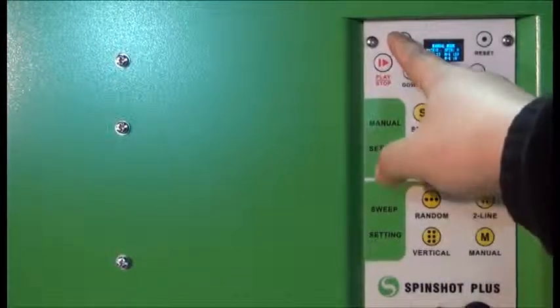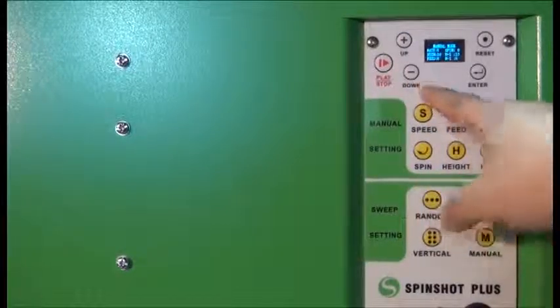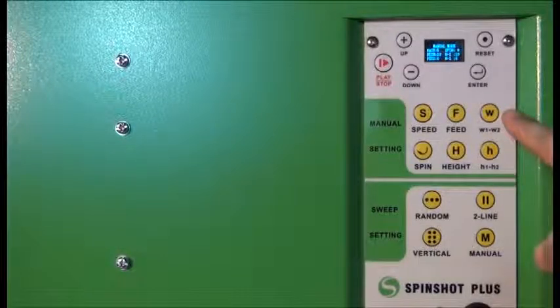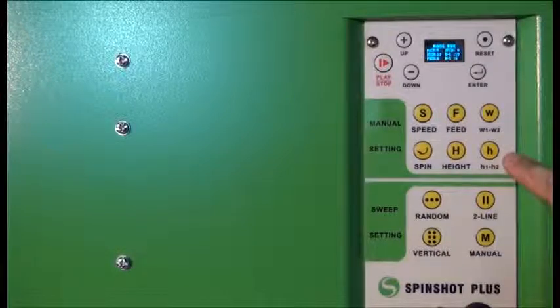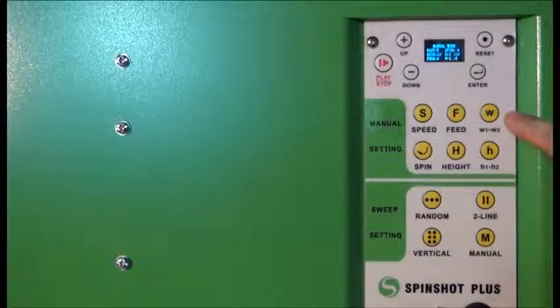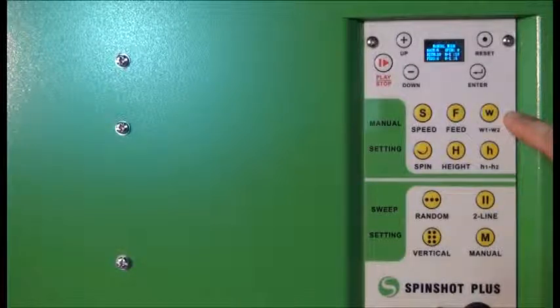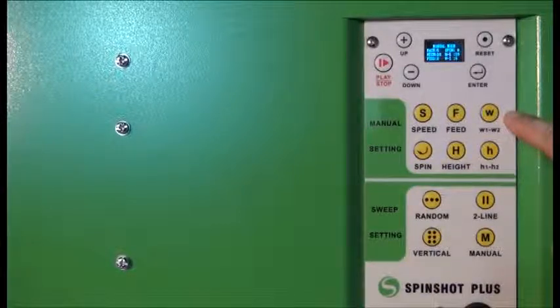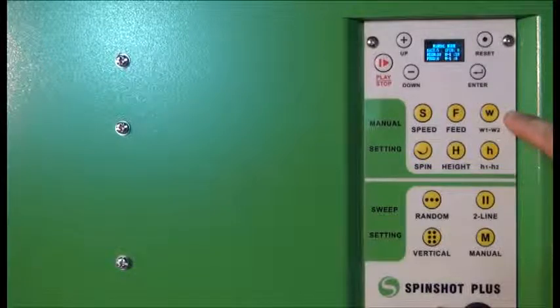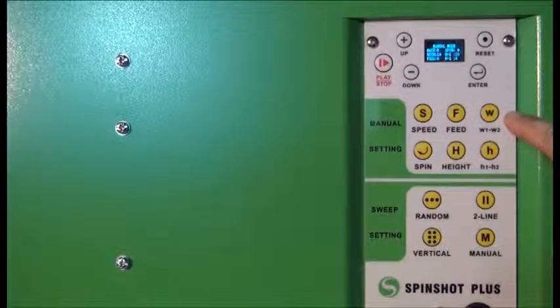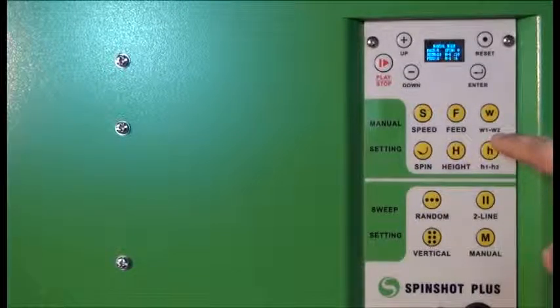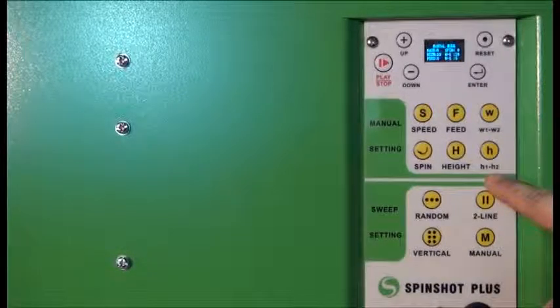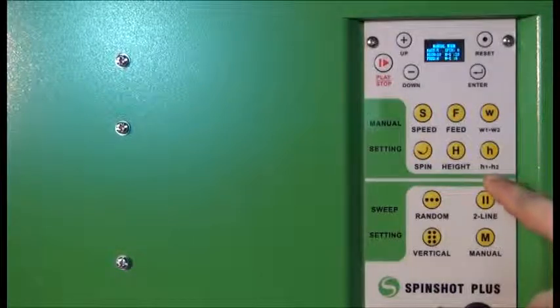Here, you have to press the function first and then you have the plus and minus signs to increase or decrease the values. You can see there's the speed, the feed. You've also got the W1 and W2 keys here and the H1 and H2 keys. The W1 and W2 keys adjust the forehand and backhand widths in two-line oscillation mode. The H1 and H2 keys control the low height and the high height in the vertical oscillation modes.